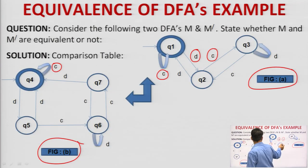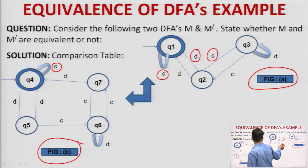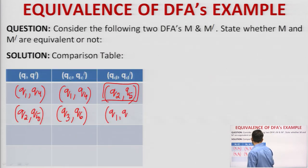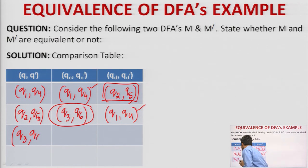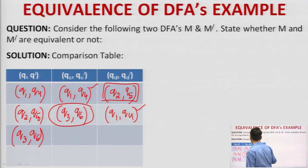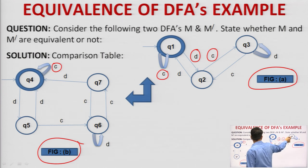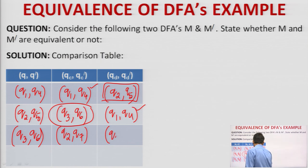Next, Q2 and Q5: on input C, Q2 goes to Q3 and Q5 goes to Q6, giving new pair Q3, Q6 — both non-final, non-final, so continue. On input D, Q2 goes to Q1 and Q5 goes to Q4, giving Q1, Q4 which is already scanned. New state Q3, Q6 is brought forward. Q3 on C goes to Q2 and Q6 on C goes to Q7, giving new pair Q2, Q7 — both non-final, non-final. Q3 on D goes back to itself and Q6 on D goes back to itself, so Q3, Q6 again — already scanned.